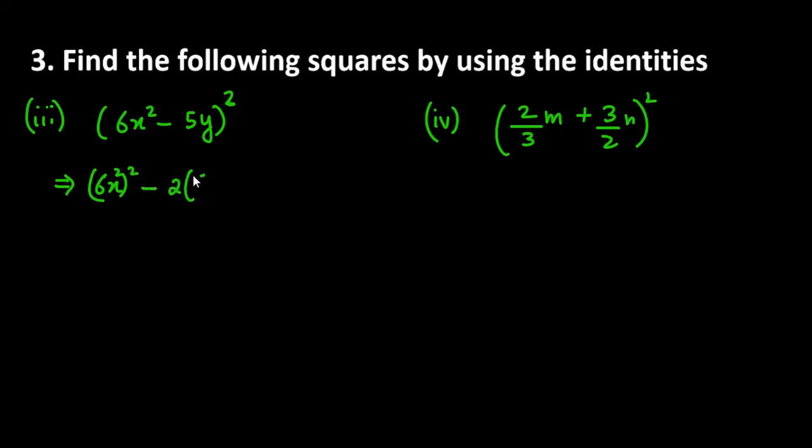First term ka square is 6x square minus 2ab. a is 6x square. And what is b? Second term is 5y. Last term is b square. Now, 6x square whole square is 36x to the 4.